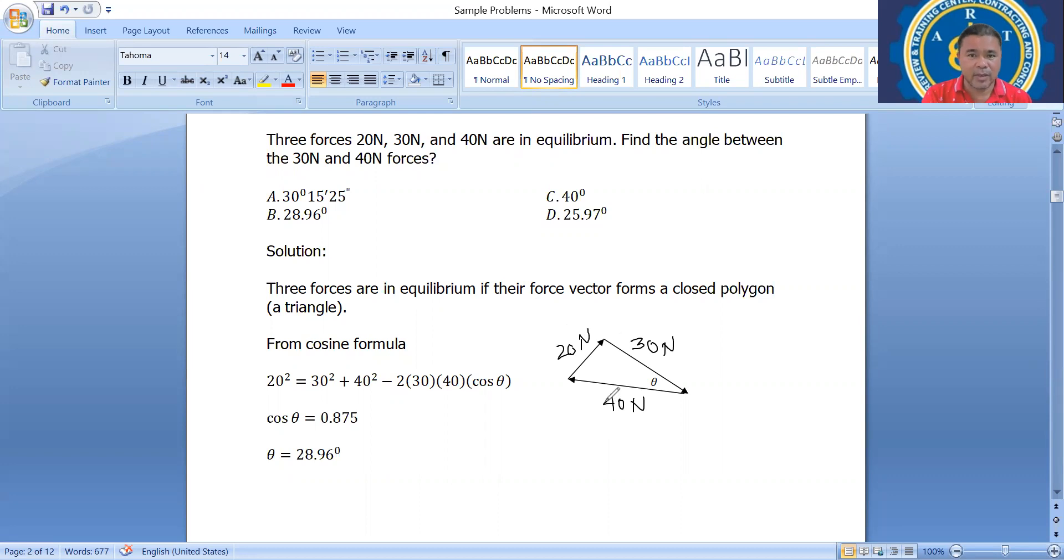So the requirement of the problem is to find the angle between 30 and 40 Newton. So this is the angle. From the given of the problem, you have the triangle, you have now the 20 Newton, 30 Newton and 40 Newton. From the cosine formula.